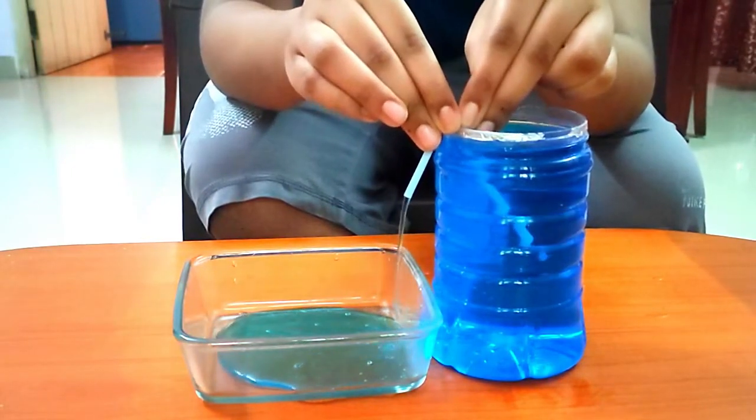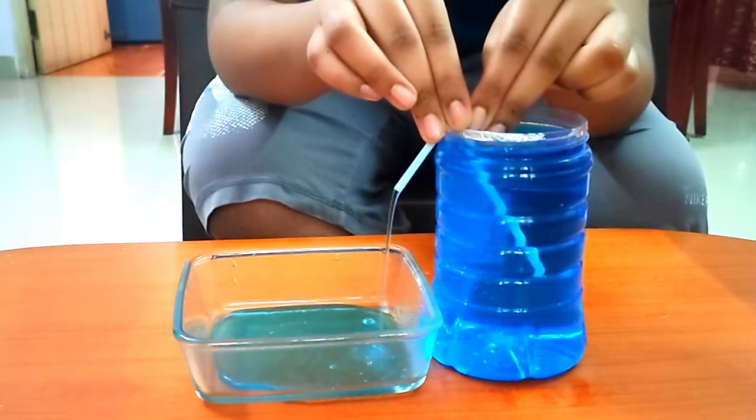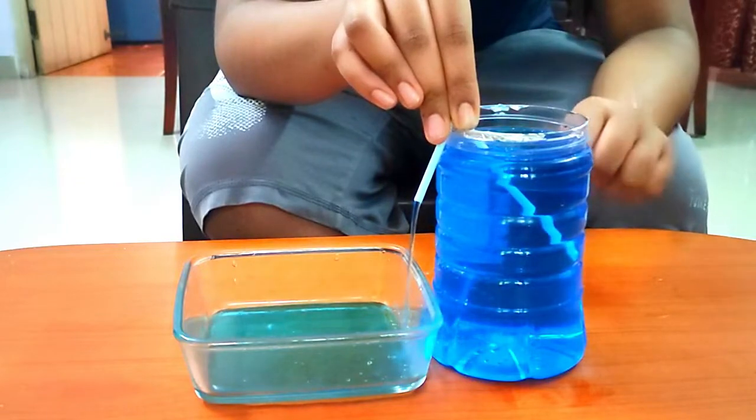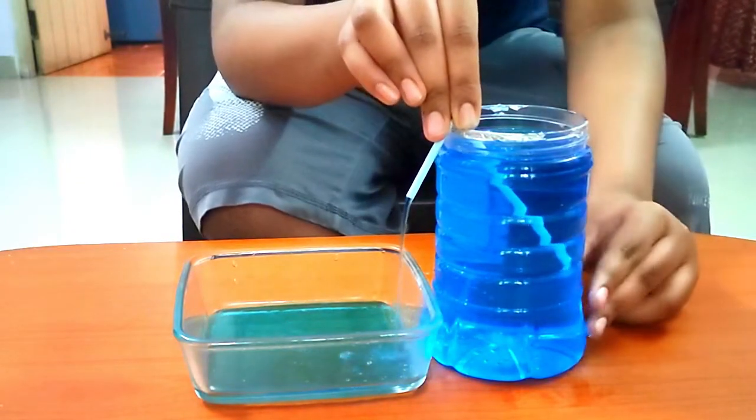How does this work? The straw pulls water out of the jar because of the difference in pressure between the two ends of the straw.